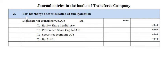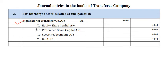The next accounting entry is for discharge of consideration of amalgamation — payment made by the transferee company to the transferor company, i.e. by the new company to the old company. The accounting entry is: Liquidator of Transferor Company Account debit, to Equity Share Capital Account, to Preference Share Capital Account, to Securities Premium Account, and to Bank Account. Since the liquidator was credited in the first entry, the liquidator's account is now debited, and whichever securities or cash are given as consideration are credited.